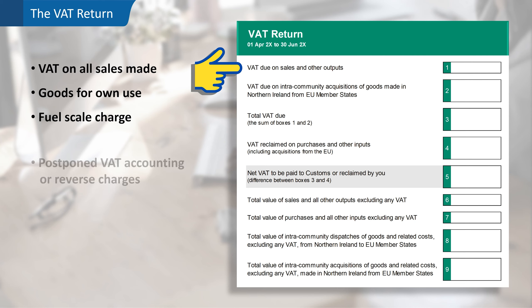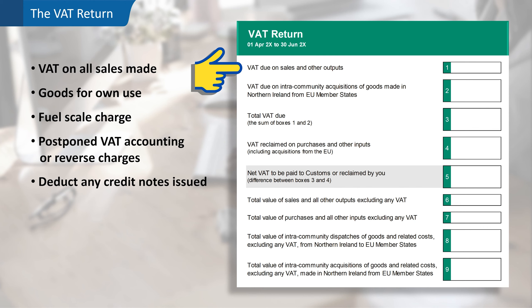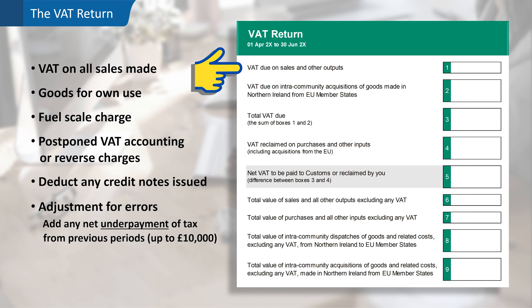Also included in box one is the VAT due on any imports accounted for through postponed accounting or reverse charges for services. We must also remember to deduct the VAT on any credit notes that have been issued. Finally, box one may also need to include an adjustment for earlier period errors. If there has been a net underpayment of VAT in a previous return, then as long as the amount is under £10,000, the adjustment for the underpayment will be added to the credit side of the VAT control account and box one of the return.